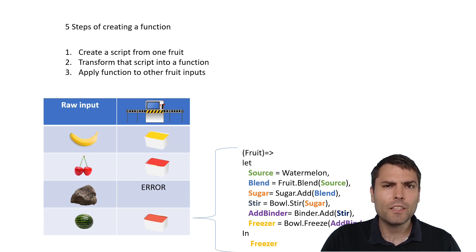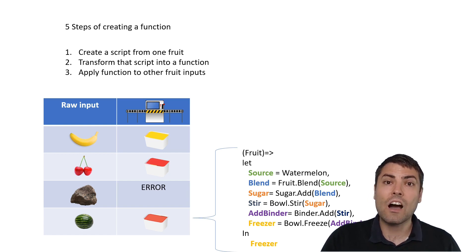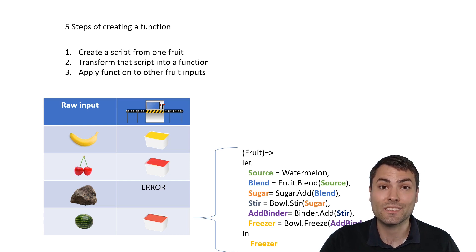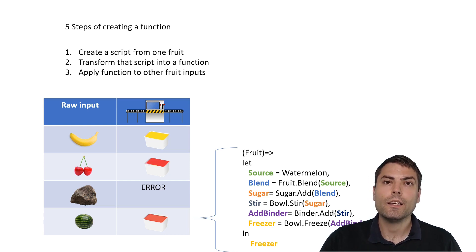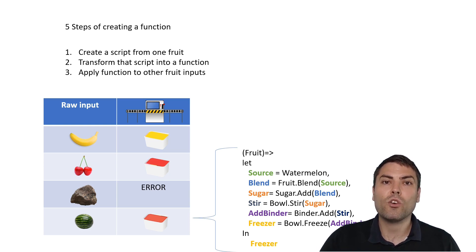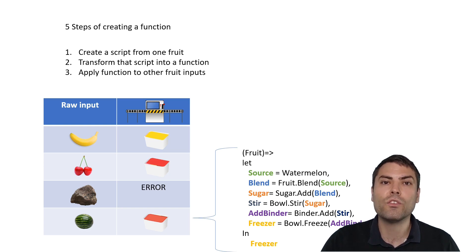Functions are created with the idea of simplifying and optimizing the authoring experience and act as sugar syntax for more complicated transformations that happen inside of them. If we think about it, all the native M functions such as transpose, fill down, unpivot, etc. are also sugar syntax of the custom functions that Microsoft created for us. Now with the use of a custom function, we can provide even more sugar syntax to our scripts and transform several hundreds or even thousands of different sources with a single click.